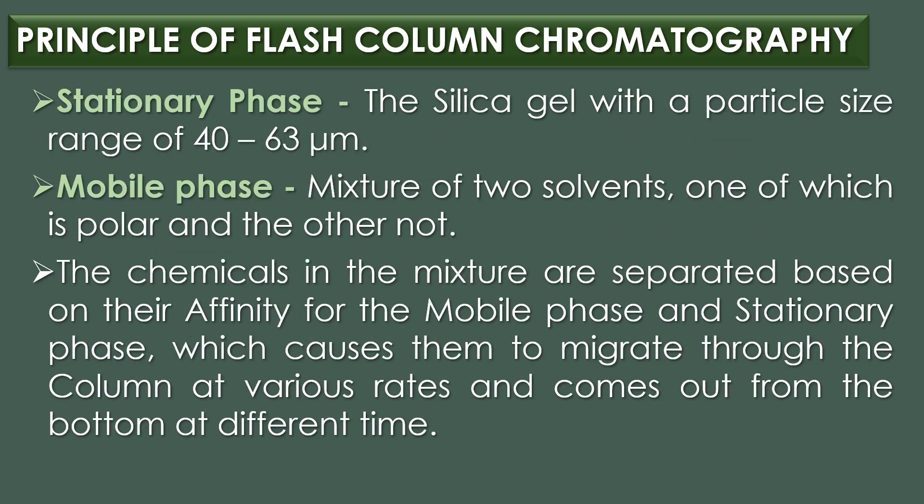The principle of flash column chromatography is basically similar to that of column chromatography. The underlying principle involves the use of a liquid eluent which is propelled through a short glass column by means of gas pressure, often nitrogen or compressed air. The glass column is filled with an absorbent material of a specific particle size and relatively large inner diameter. Silica gel with a particle size range from 40 to 63 micrometers is commonly employed as the predominant stationary phase.